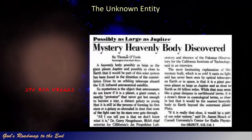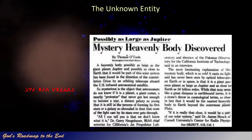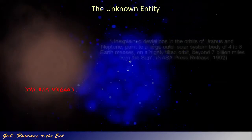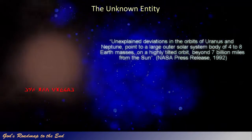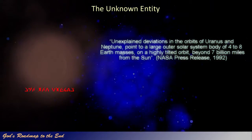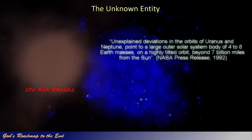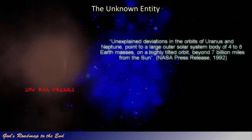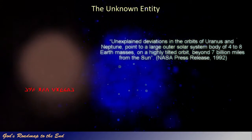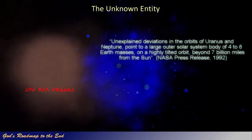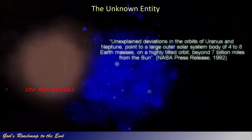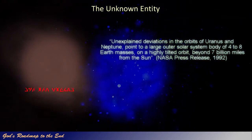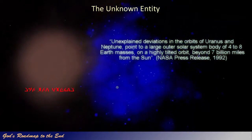After this point, no further information was provided until nine years later, when another press release, also by NASA, found its way out into the public domain. The writer stated the following: Unexplained deviations in the orbits of Uranus and Neptune point to a large outer solar system body of four to eight Earth masses, on a highly tilted orbit, beyond seven billion miles from the Sun. This provides a little more information with respect to the possible size and orbit of this object, and we notice that the distance between this object and the Sun is estimated to be beyond seven billion miles — indicating a definite decrease in distance over the nine years between the two press releases.